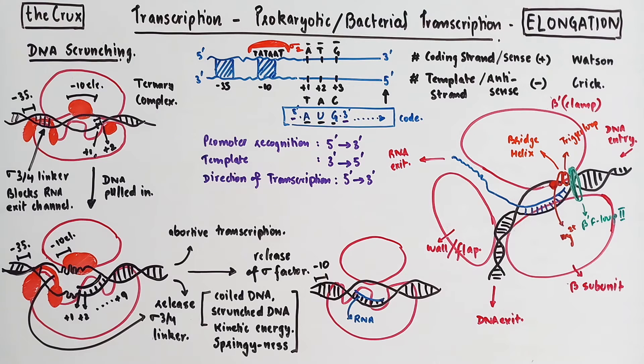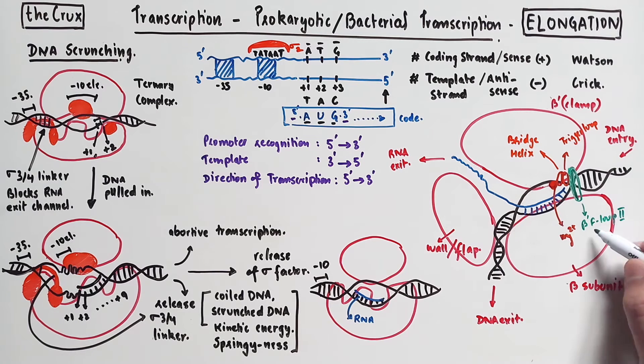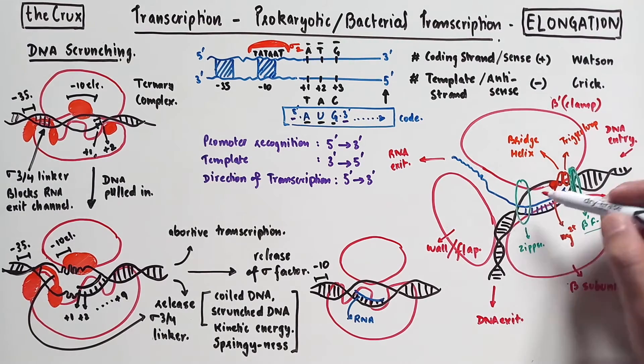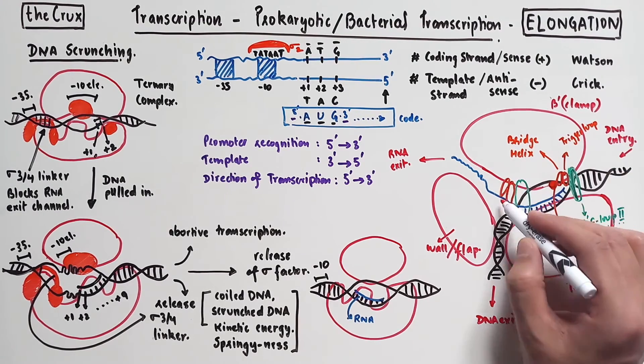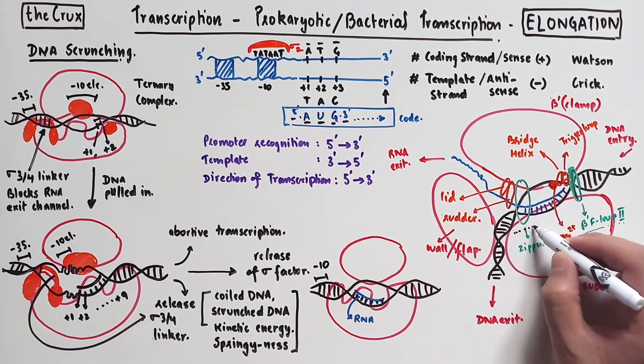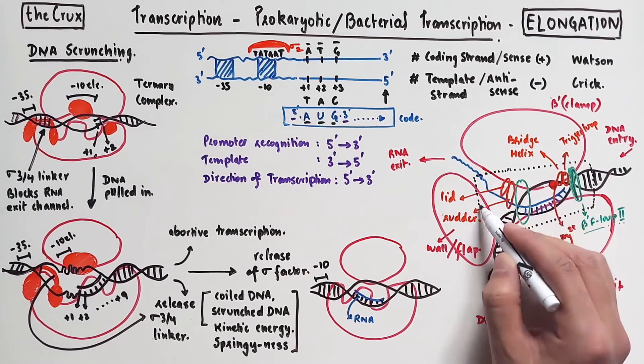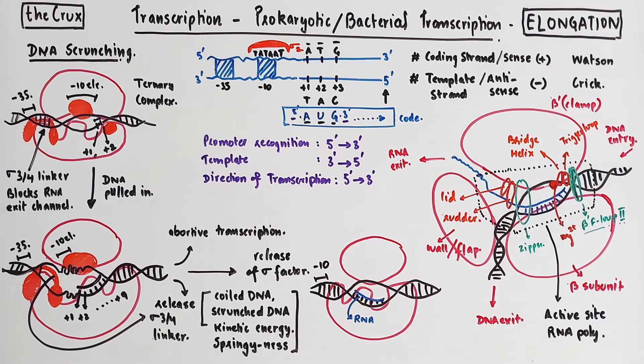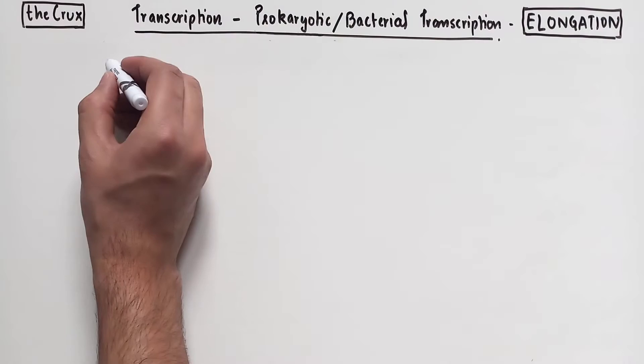If we look on the other side, we have a structure similar to the betaFloop2 called the zipper. Next to the zipper, we have structures known as rudder and lid. This dotted region that we were looking at is known as the active site of the RNA polymerase enzyme. Now that we understand this, we will discuss the function of each of these units and how they come together to function in the process of elongation.